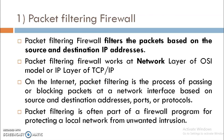The first type is the Packet Filtering Firewall. Such firewalls filter packets based on their source and destination IP addresses. It works at the network layer of the OSI model, or the IP layer of the TCP/IP model. Packet filtering is the process of passing or blocking packets at a network interface based on source address, destination address, ports, or protocols. It is often part of a firewall program for protecting a local network from unwanted intrusion.